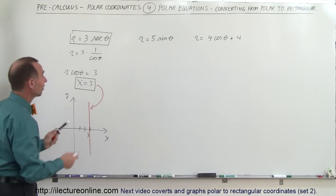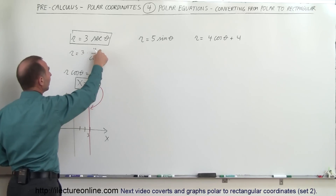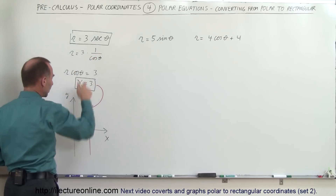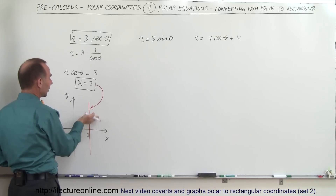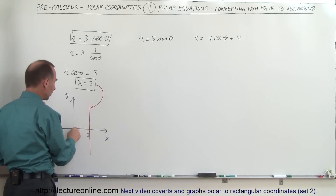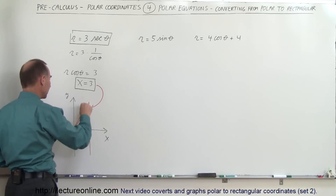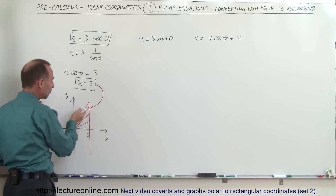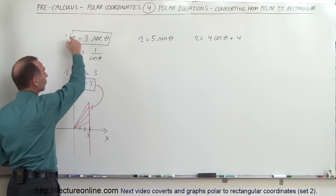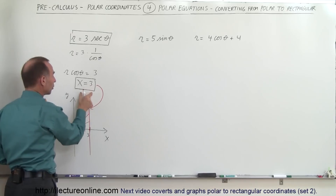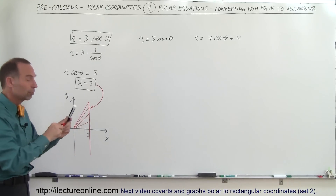If the angle theta equals 0, the cosine of 0 is 1, and then r would equal 3. That means if the angle is 0, you'd end up right there. When the angle becomes bigger and bigger, you find different points on the graph — r gets bigger for larger angles of theta. So you can graph it this way, and you need to be able to go back and forth between the two representations.